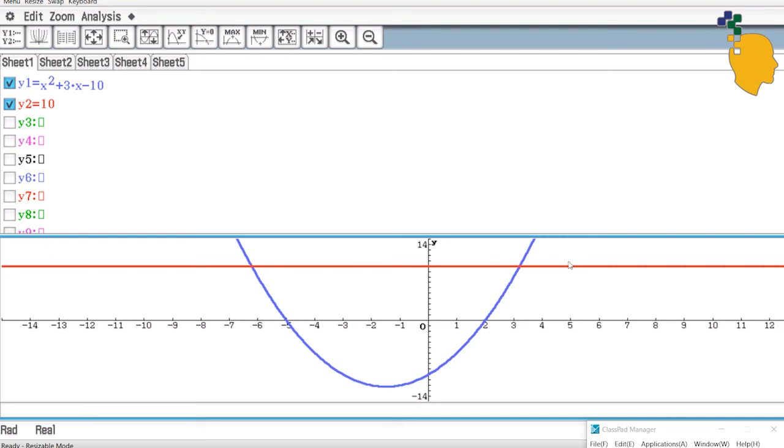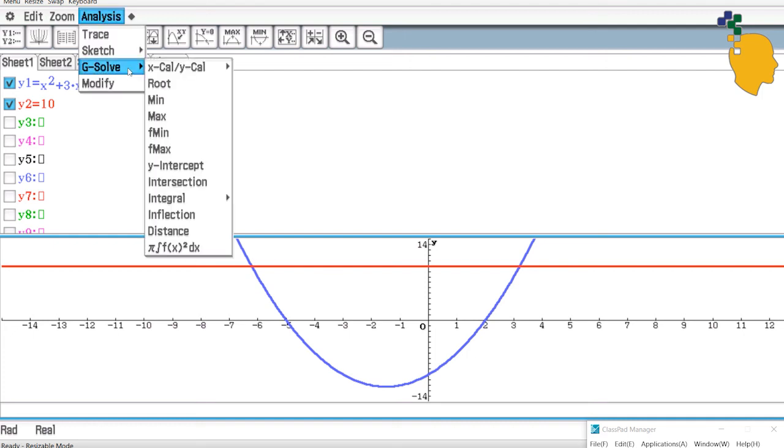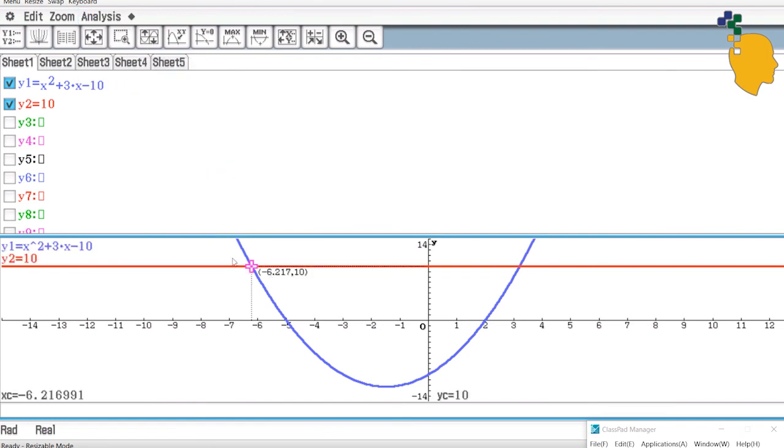And all you have to do is find the intersection between the parabola and the horizontal line. So go to analysis, g-solve, then click onto intersection and it'll show you the left intersection first. So when x is negative 6.217, your y-value is 10.